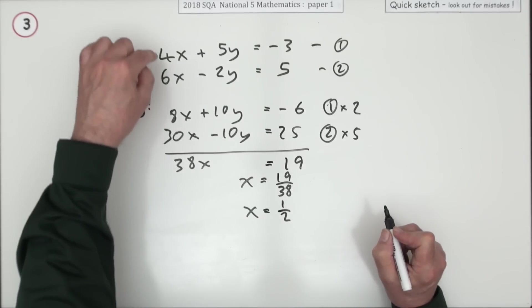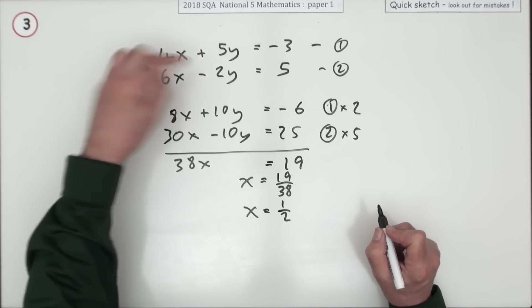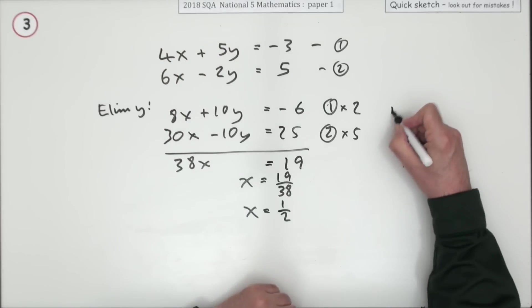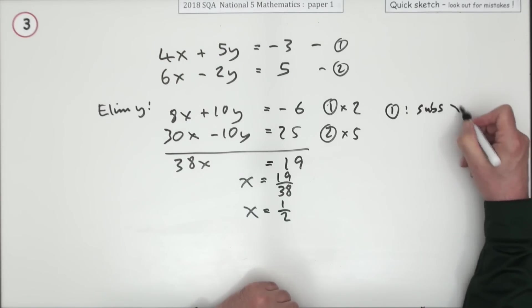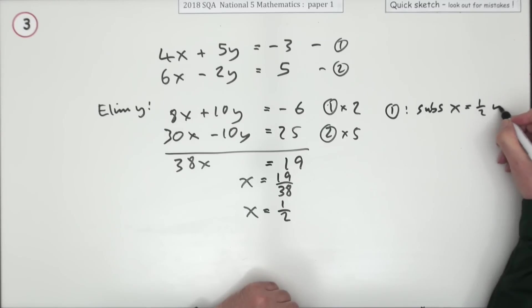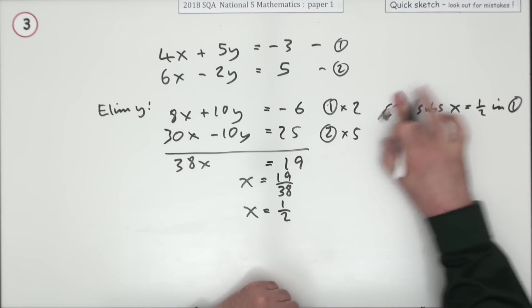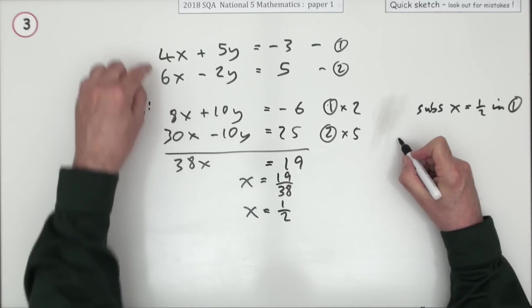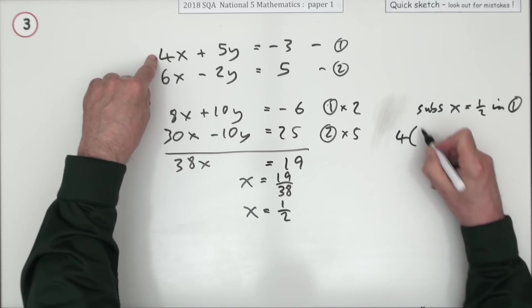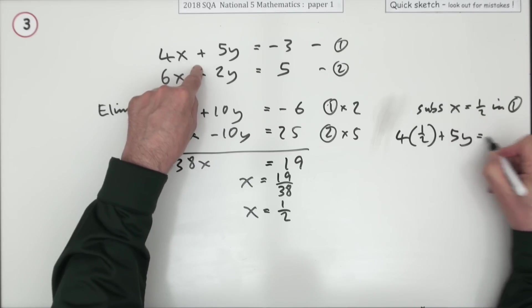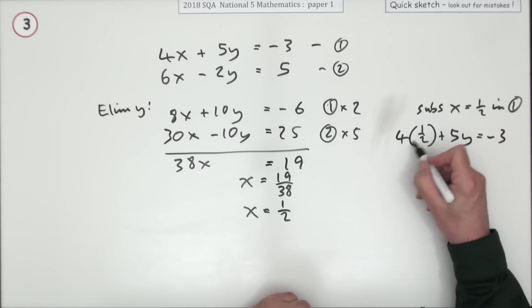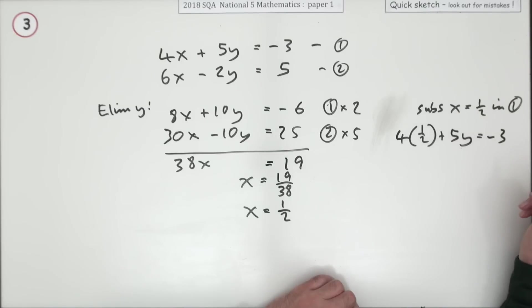Then go back to whichever one you prefer to find y from. I know it's got a bigger number but at least it's not got a negative. Maybe I'll go back to number 1 now. And I'm going to substitute x equals a half in 1. I already said it there. Yes. So that means number 1 now reads 4 times a half, x plus 5y equals negative 3. Just using that for 4 times a half. Well 4 times a half is 2. So 2 plus 5y is negative 3.